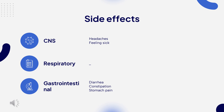By doing so, it inhibits acid secretion into the gastric lumen. This effect is dose-related and leads to inhibition of both basal and stimulated acid secretion irrespective of the stimulus. Esomeprazole is the S-isomer of omeprazole, which is a racemate of the S and R-enantiomers. Esomeprazole has been shown to inhibit acid secretion to a similar extent as omeprazole, without any significant differences between the two compounds in vitro.